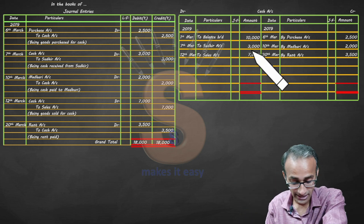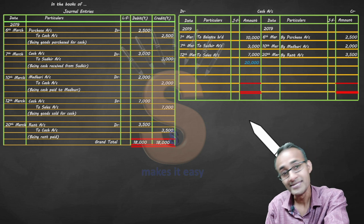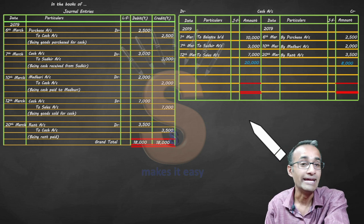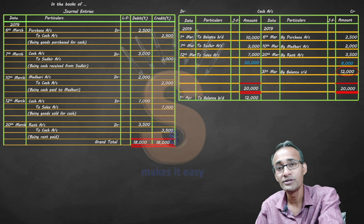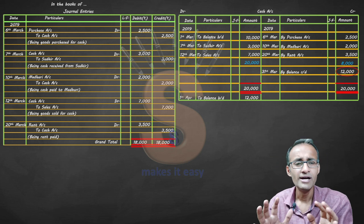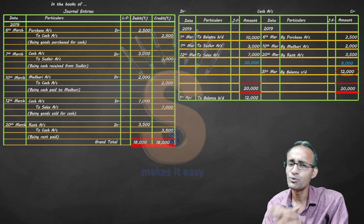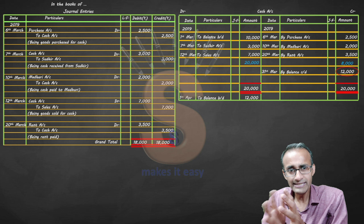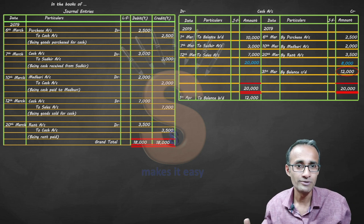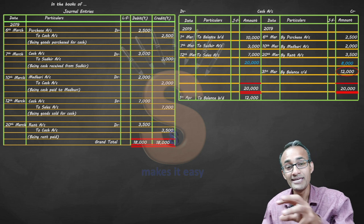After posting, total both sides. The debit side totals to 20,000 and the credit side totals to 8,000. Since debit is larger, the difference is 12,000, which becomes the balance carried down to the credit side. At the beginning of the next month, that becomes balance brought down. Whenever a ledger-based question comes in any exam, this is how you balance it. That covers all the journal entries.